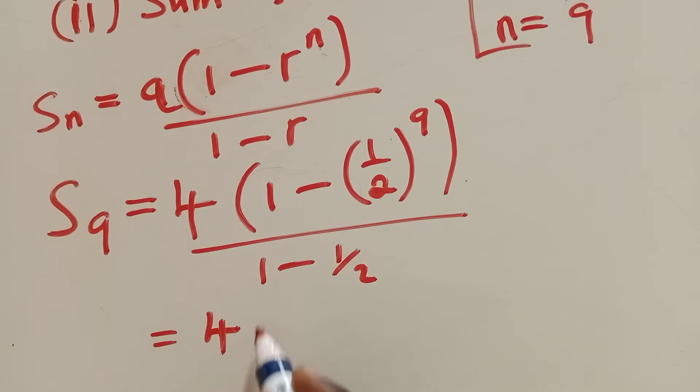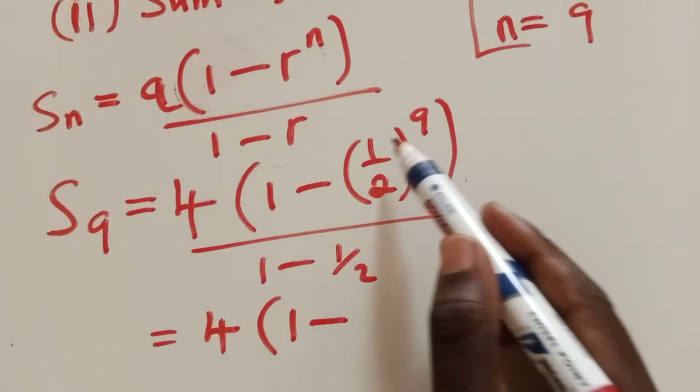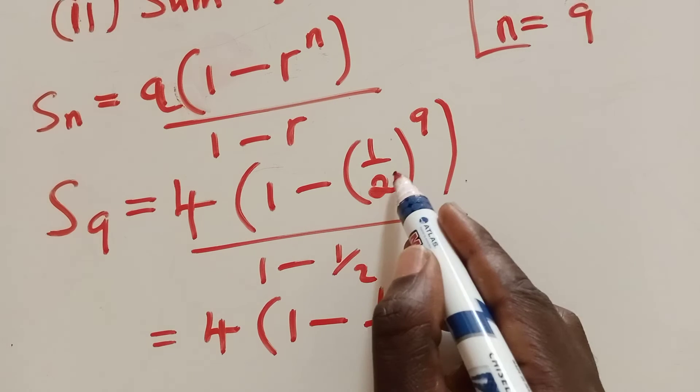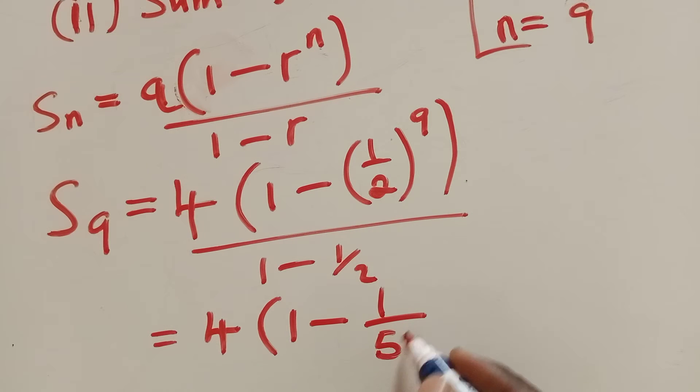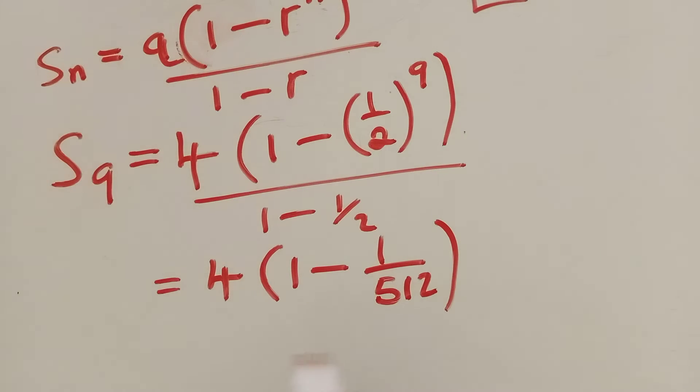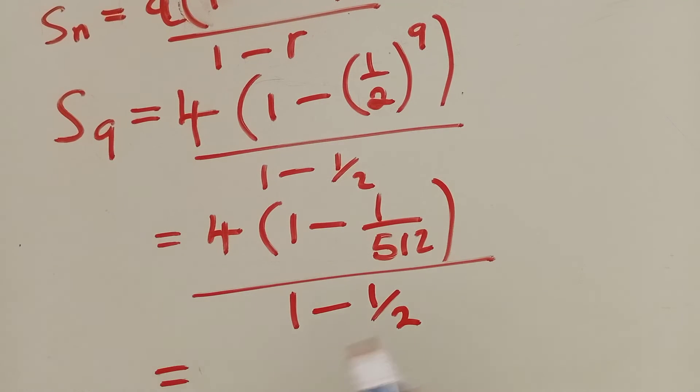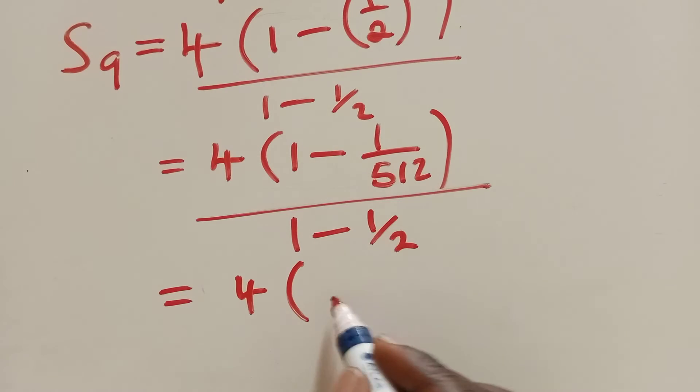So now we can work out things here, we have 4, 1 minus, we will try to find this, 1 to the power 9 is 1 over 2 to the power 9. What is 2 to the power 9? It is 512. I guess you're finding 512. So confirm if you're finding 512. Yes, it's 512. I've just confirmed, over 1 minus 1 over 2.